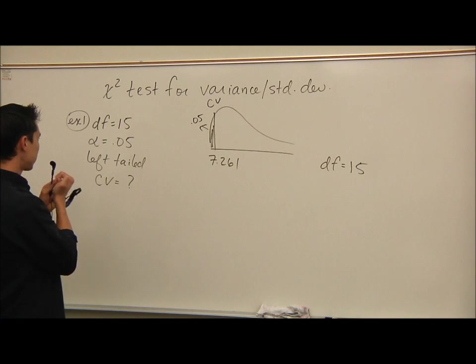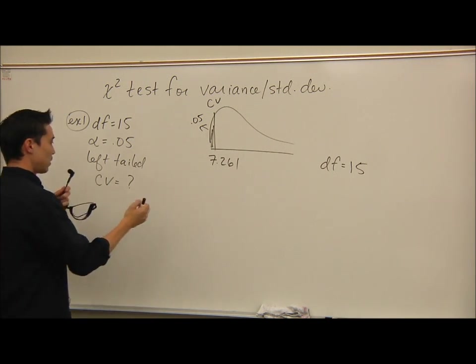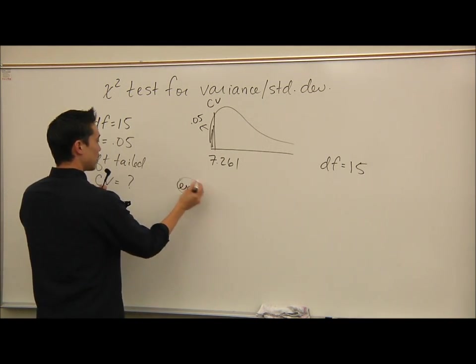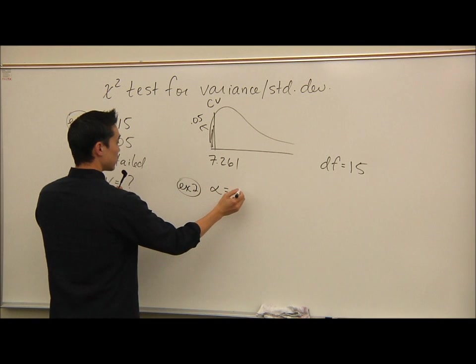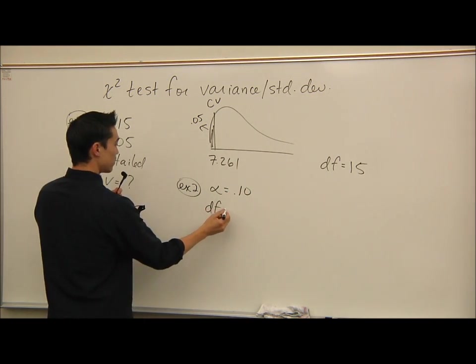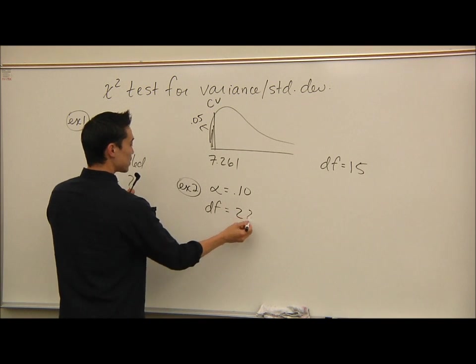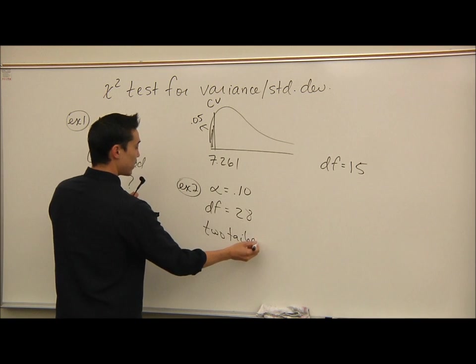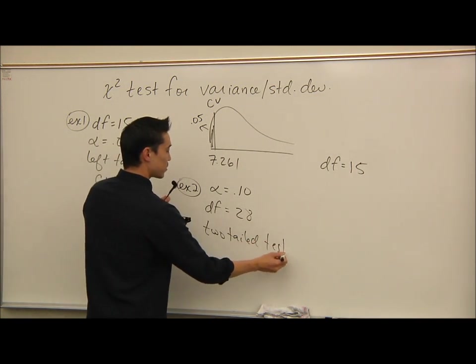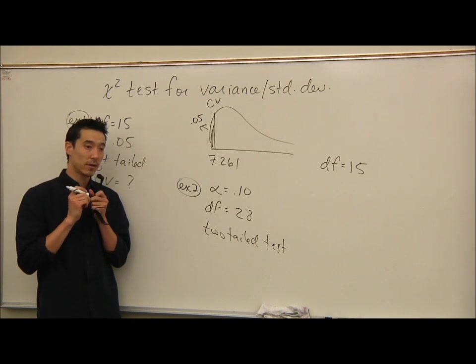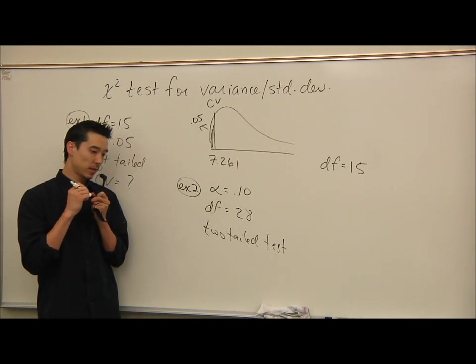Let's try another one. Let's do example two here. Let's say alpha is 0.10. Let's say the degrees of freedom is 28. And let's say it's a two-tailed test. All right? So spend a minute. Draw your picture. And I want you to tell me what both critical values are. The left critical value and the right critical value. See if you can get that.